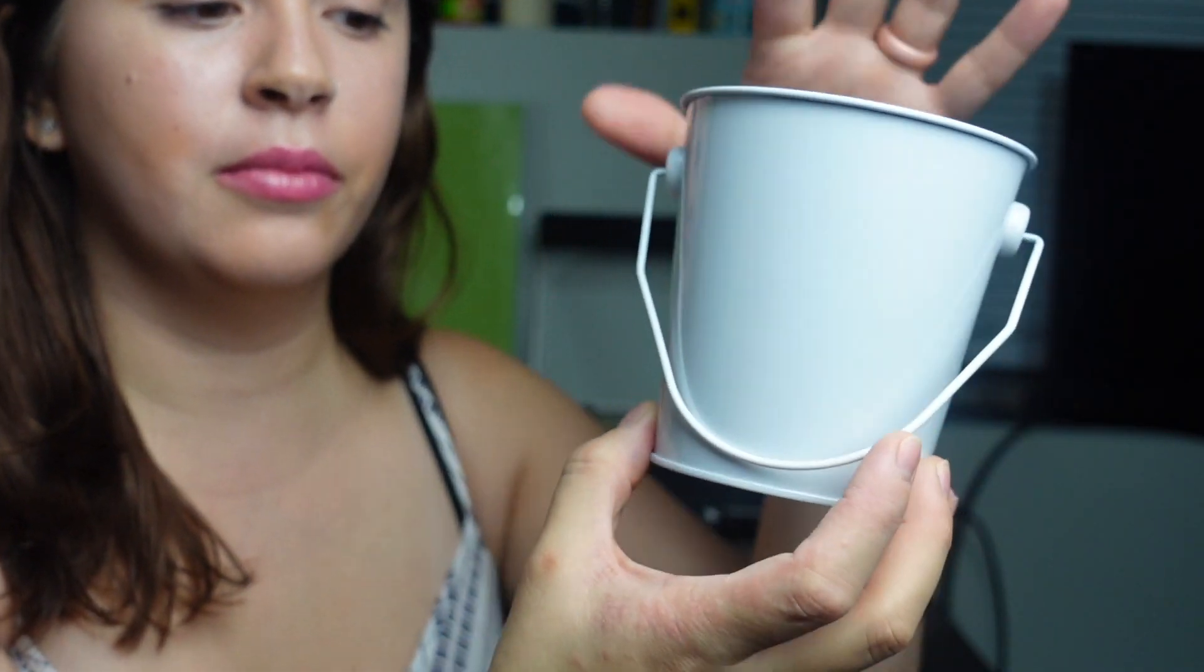Right here, this is the Heat Press Nation Signature Series mug press. This is the four-in-one. It comes with a latte, 11 ounce, 15 ounce, and a shot glass attachments. Right now I have the latte one because the bucket is wider on top and not as wide in the bottom.